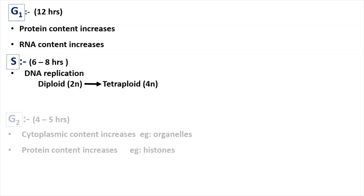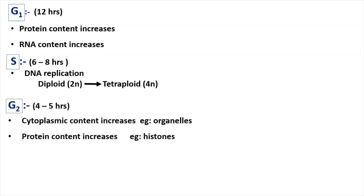Then comes the Gap 2 phase. In G2, protein content also increases, but here the proteins increasing are those needed for mitosis — for example, histones. Histones are needed to make the chromatin structure from chromosomes. In G2, those proteins increase and the cytoplasmic content also increases — for example, organelles such as endoplasmic reticulum and mitochondria increase in number. And in the Mitotic phase, cell division happens.